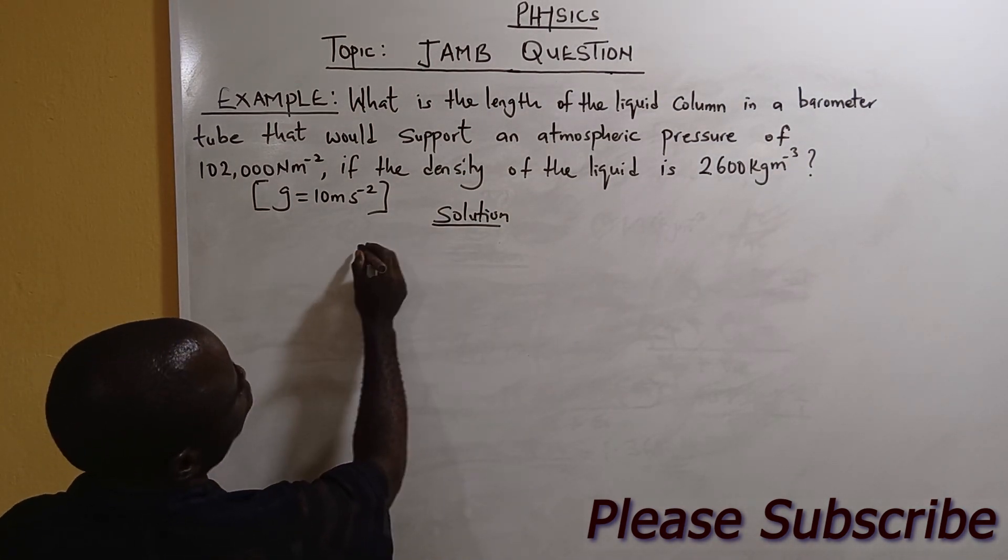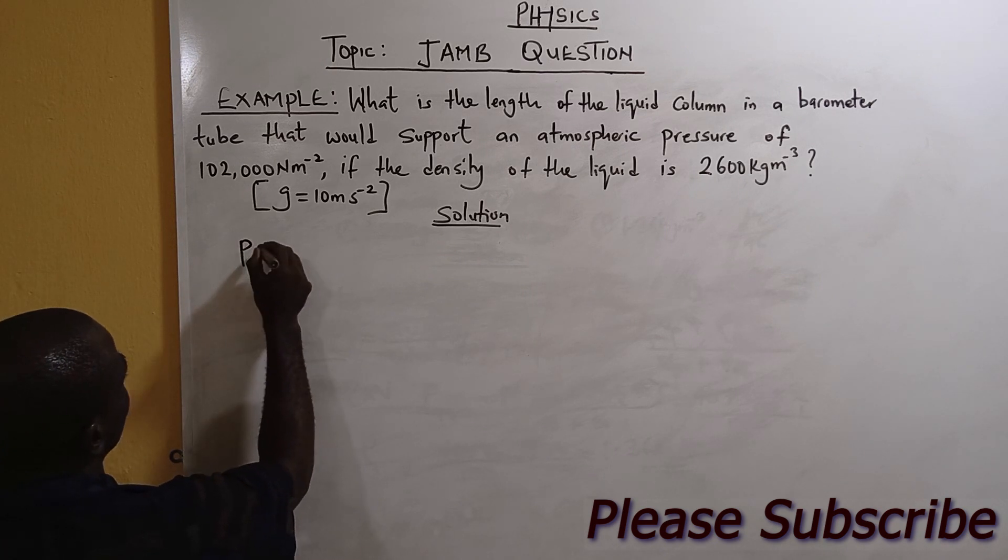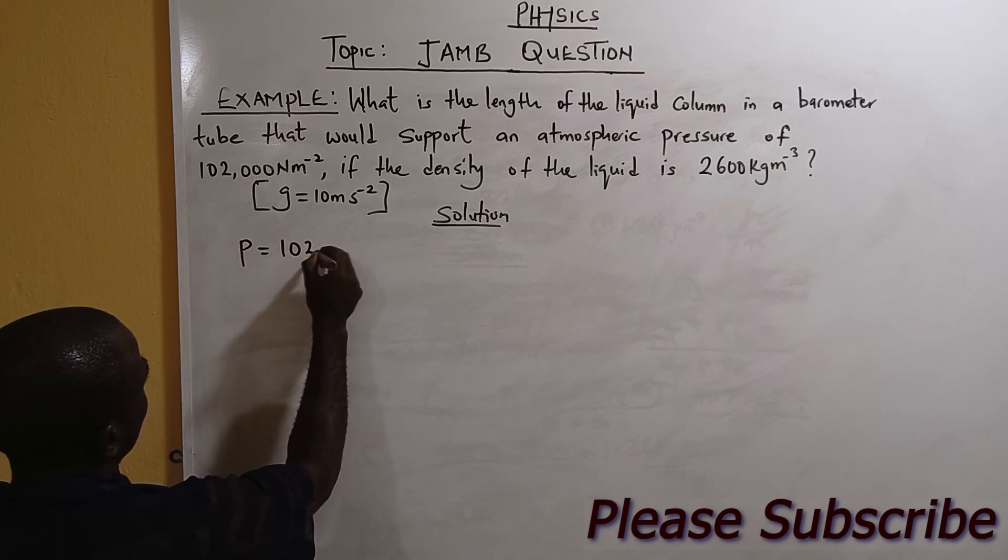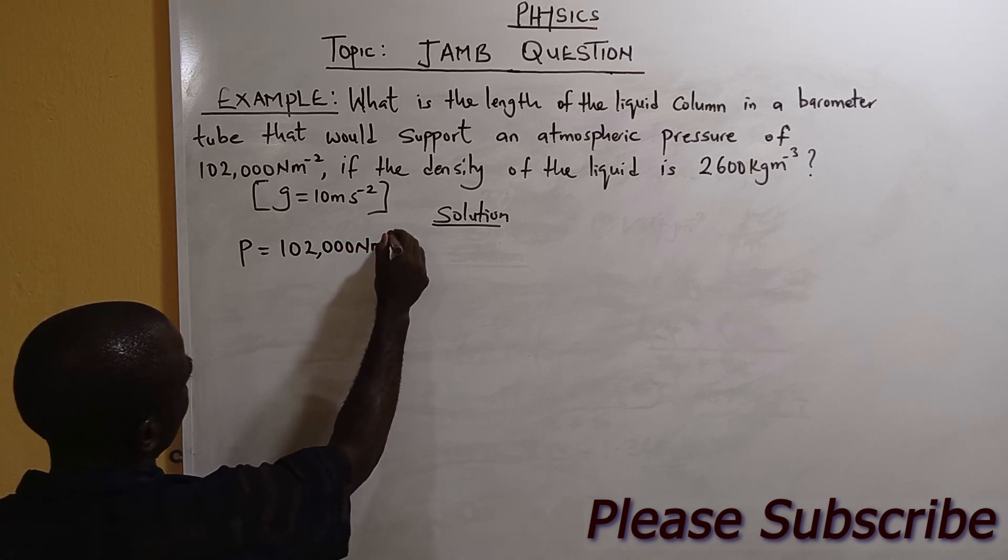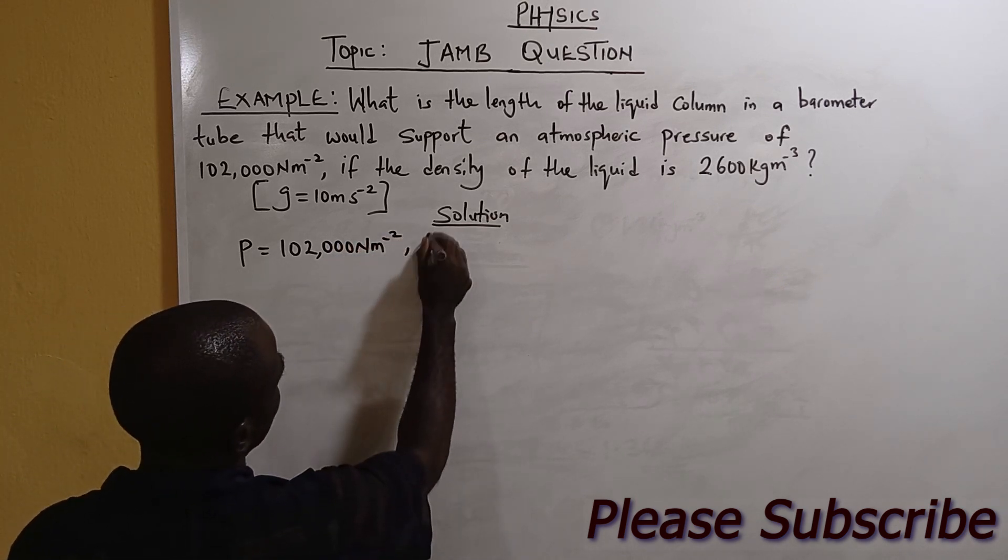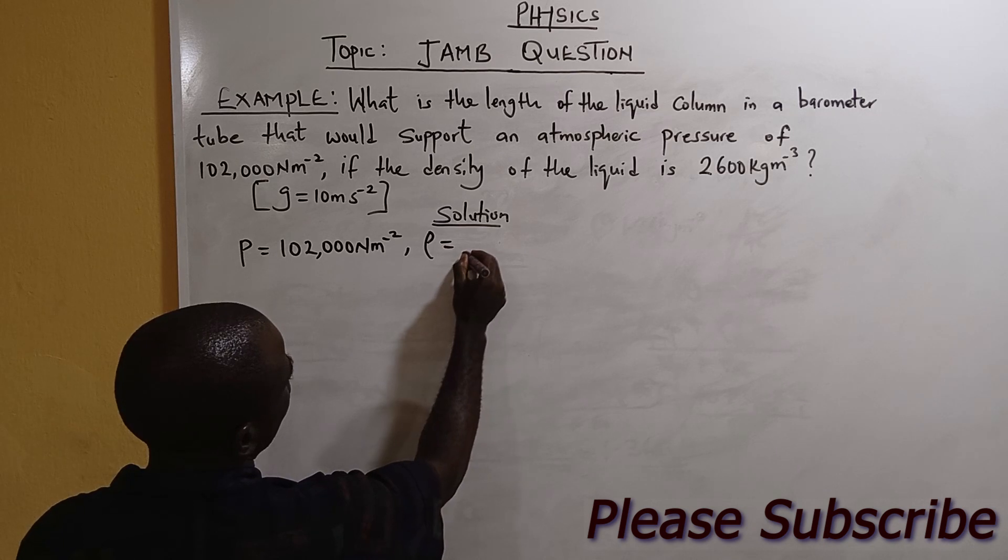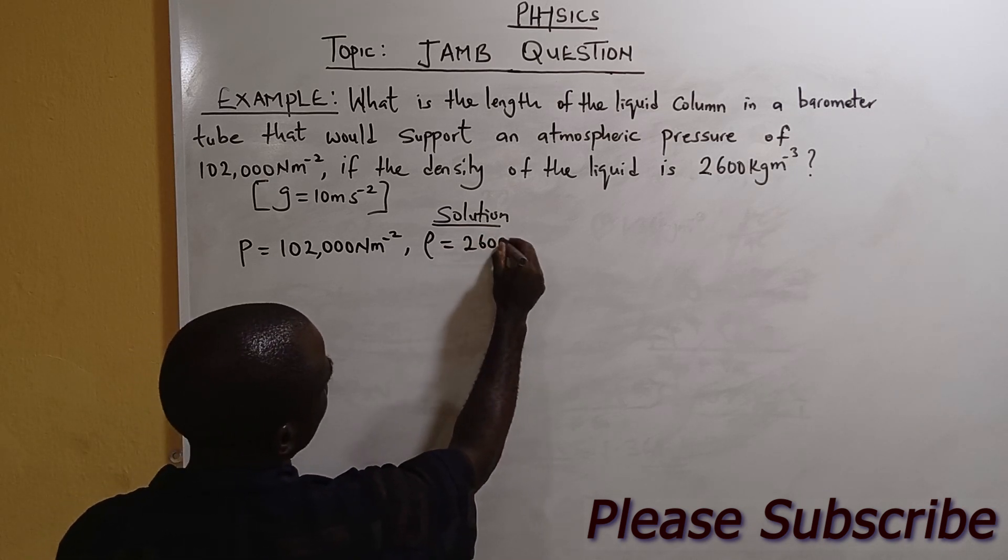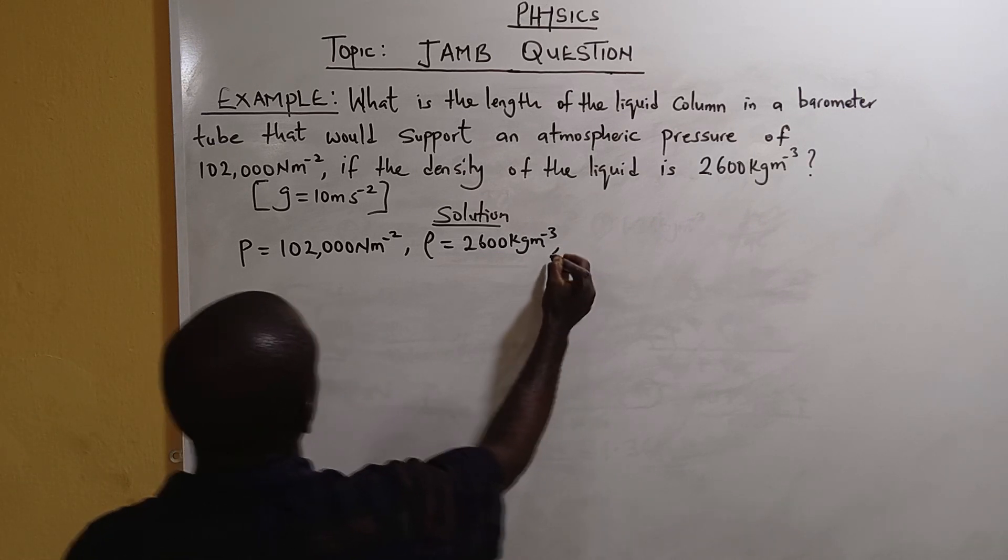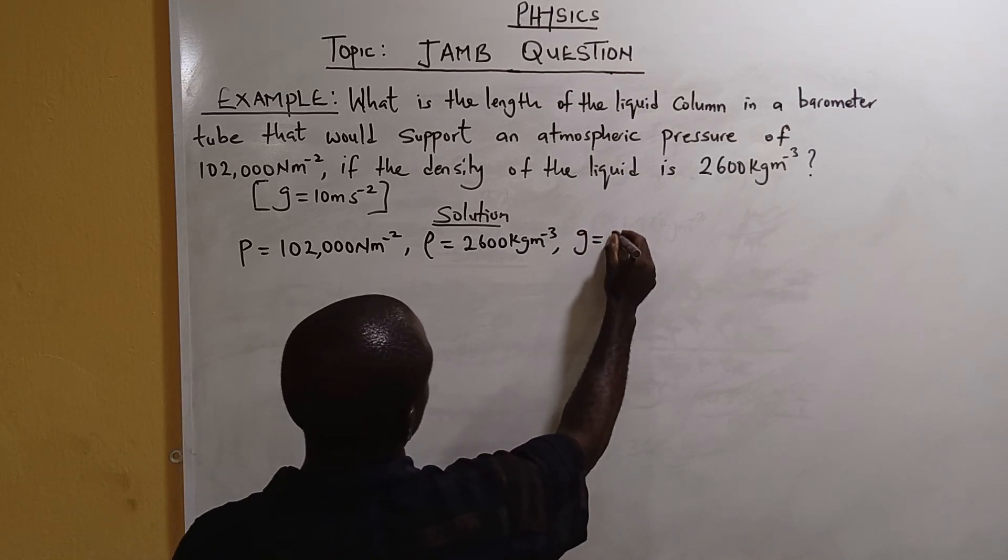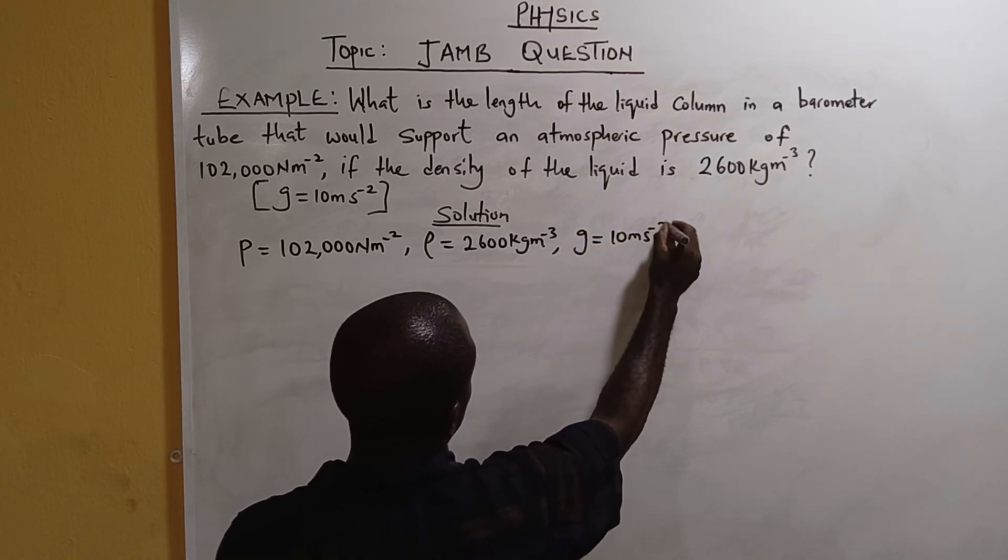We are given atmospheric pressure P equals 102,000 newton per meter squared. We are given the density of 2,600 kilogram per meter cubed. We are given acceleration due to gravity g equals 10 meter per second squared.